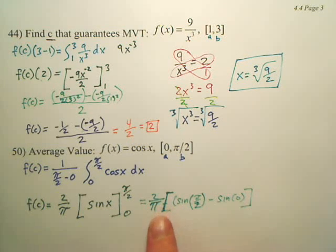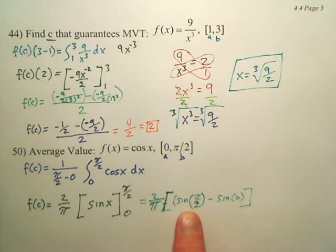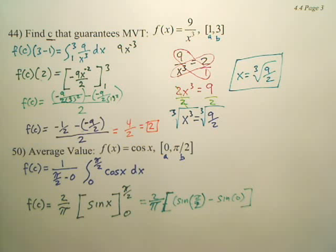So 2 over pi, and this is f of b, f of a. We're subtracting them.